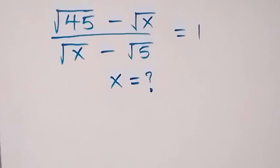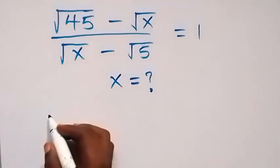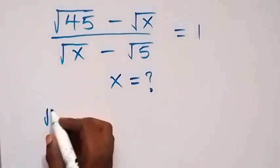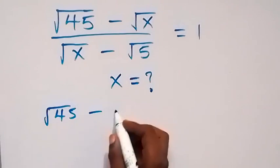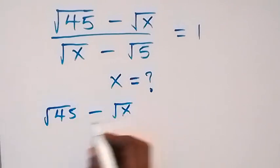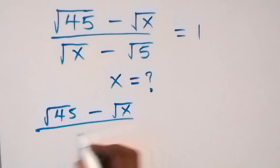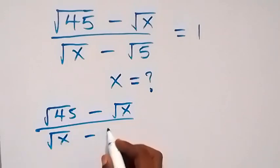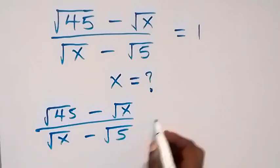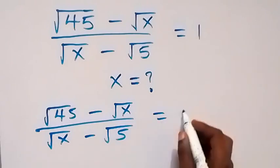Hello and welcome. We're going to solve for x in this math problem: root 45 minus root x, divided by root x minus root 5, equals 1.